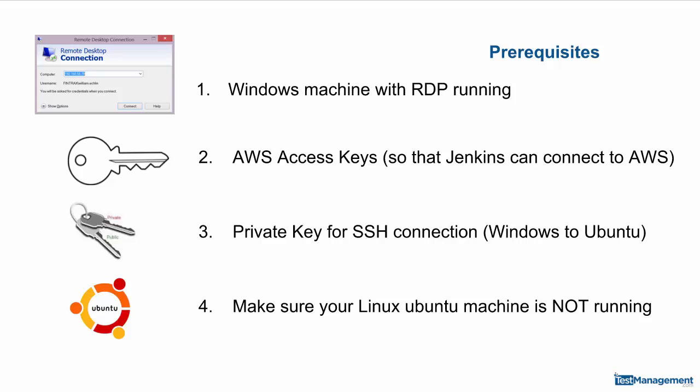You will need to have your Windows machine up and running with an RDP terminal. You will need your AWS Access Key so that Jenkins can connect to AWS. I'll show you how to do that in a second.